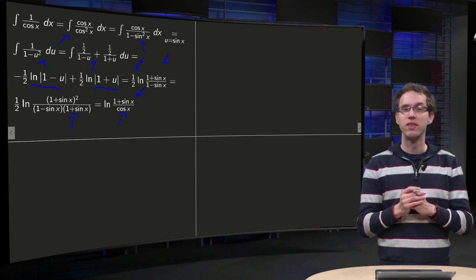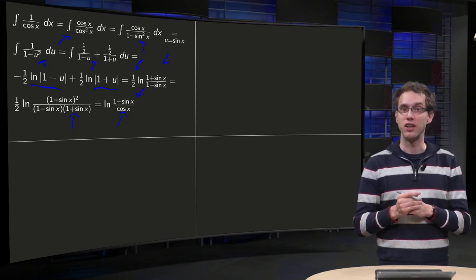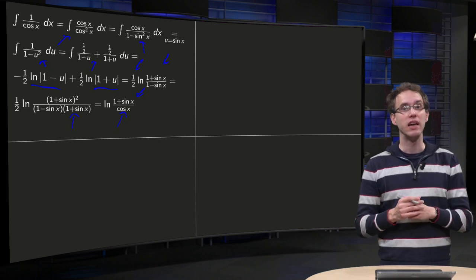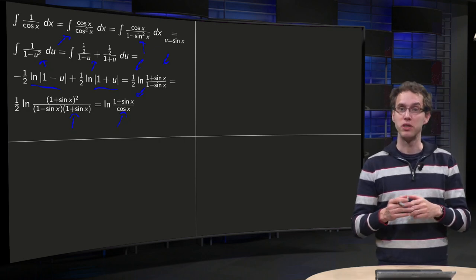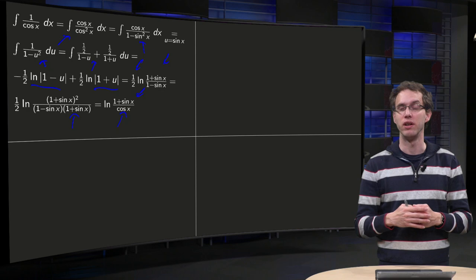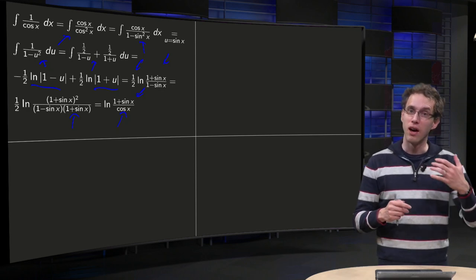You see, the method of variation of parameters works nicely for nasty right hand sides. However, you can still encounter quite difficult integrals in this method.